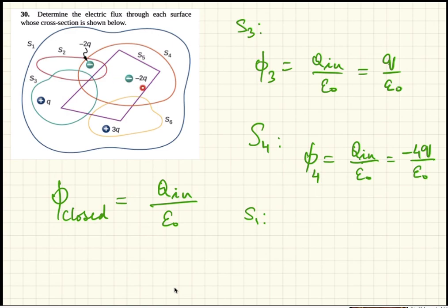4Q, and 0. So the flux through S1 is Q inside divided by epsilon naught, and the net charge inside is 0. So that finishes that problem.